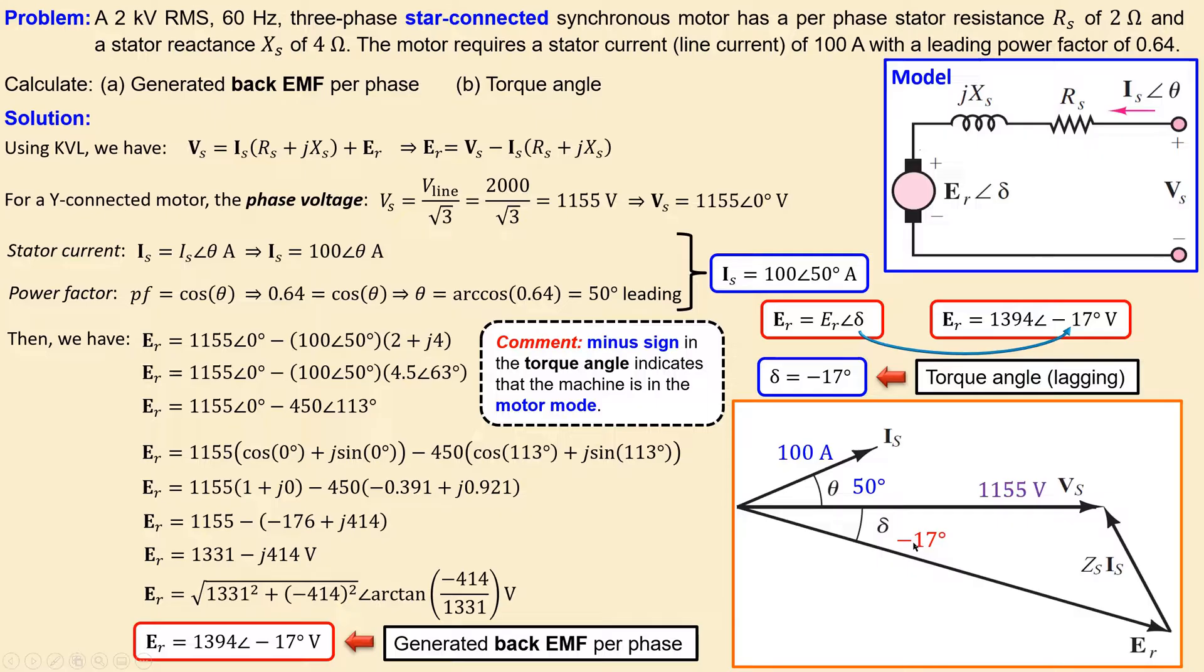We also have the back EMF, which is 1394 volts. This is smaller than the phase voltage.